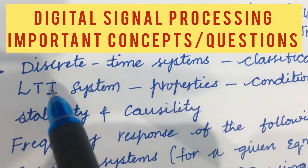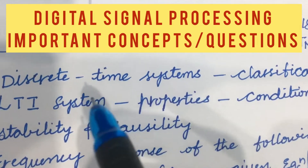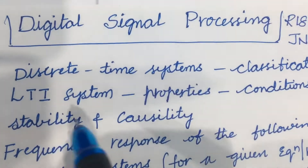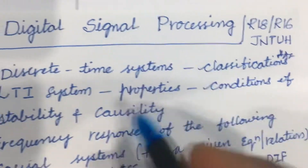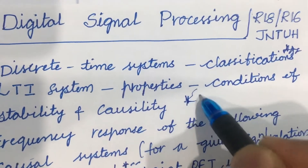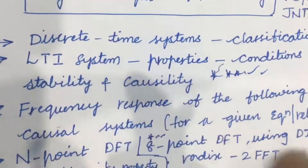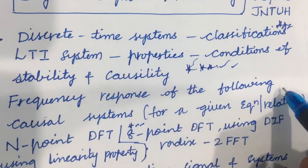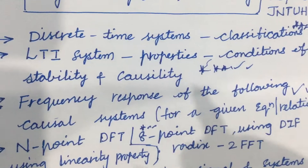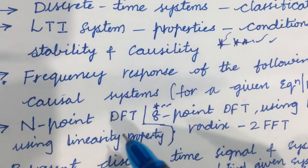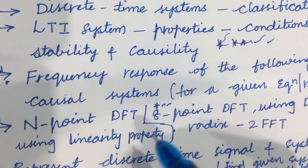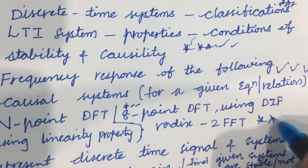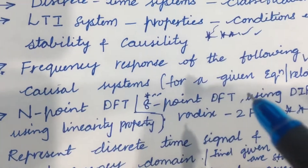The first and foremost gunshot question is discrete time systems and their classification, which may be an 8-mark question. Next, LTI system properties and the conditions of stability and causality is also one of the gunshot questions. Later, the frequency response of causal systems for a given equation is also asked. Additionally, 8-point DFT using linearity property or 8-point DFT using DIF radix-2 FFT is also one of the gunshot questions — you may get any one question from these two concepts.